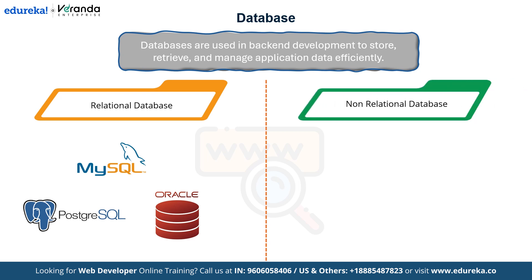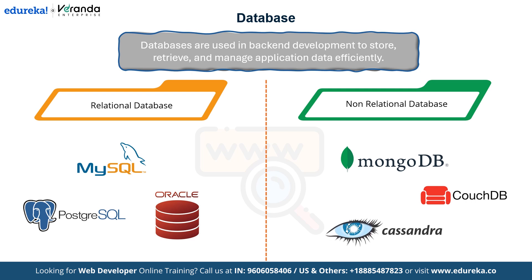Moving on to non-relational databases — unlike relational ones, non-relational databases are designed to handle unstructured or semi-structured data, offering greater scalability. Popular options include MongoDB, CouchDB and Cassandra. If you are aiming for scalability and performance, MongoDB is a solid choice to focus on.